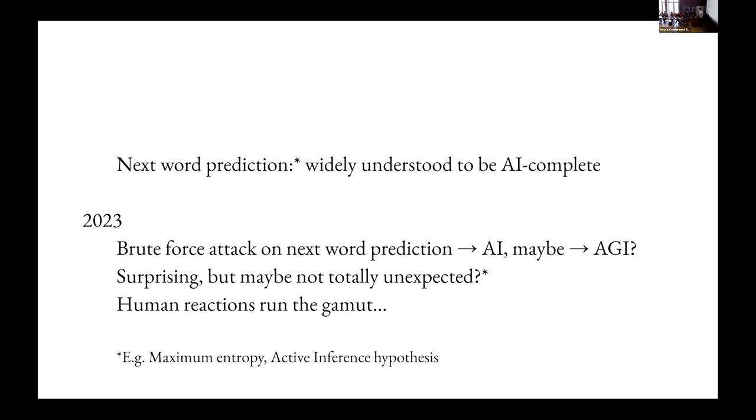That's surprising, but maybe in retrospect not totally unexpected because things like the active inference hypothesis and maximum entropy arguments about what the brain does have basically always held that the main thing that brains do is to predict the next token. So if we attack predict the next token with kind of all we've got, then maybe it should be less surprising than it is that all of these things emerge.